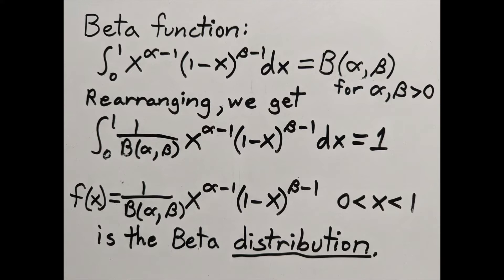Therefore, we could divide both sides by beta and put it inside the integral. The new integrand is defined from 0 to 1, it's positive, and the total integral equals 1, which means it's a probability distribution. So this is the beta distribution.